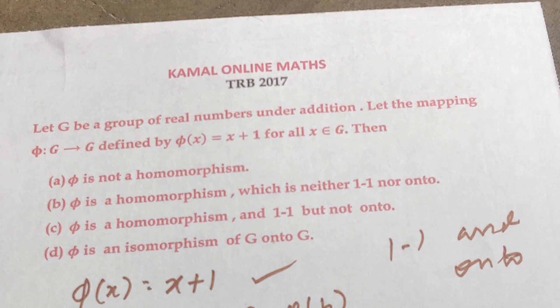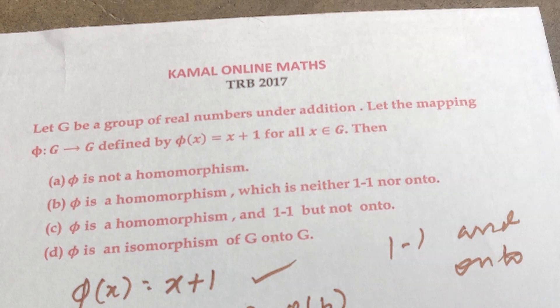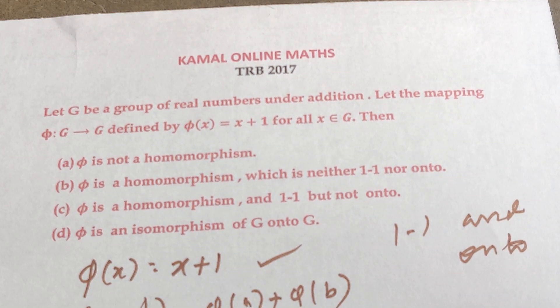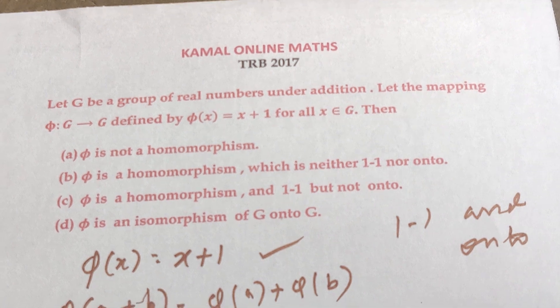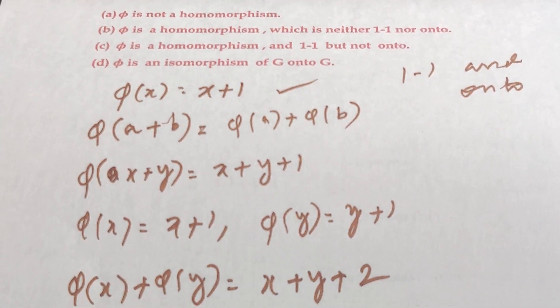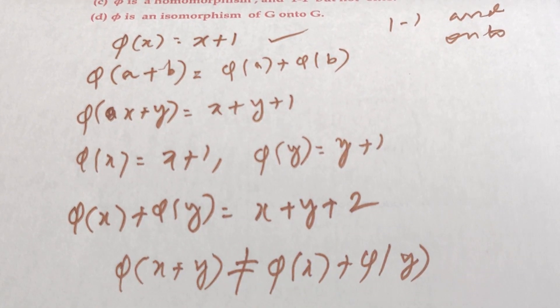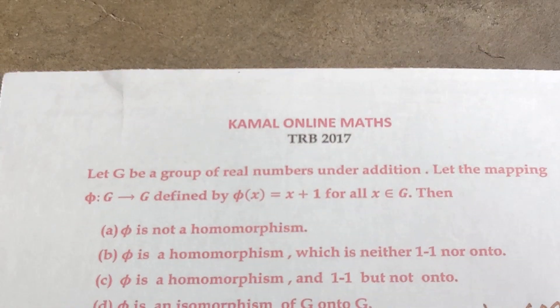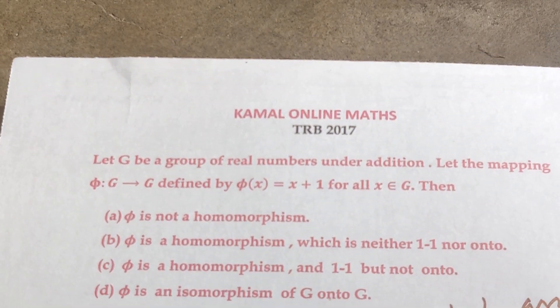Phi from the set of all real numbers to real numbers, phi of X equals X plus 1, is a one-to-one and onto function. However, it is not a homomorphism, because the homomorphism condition fails.